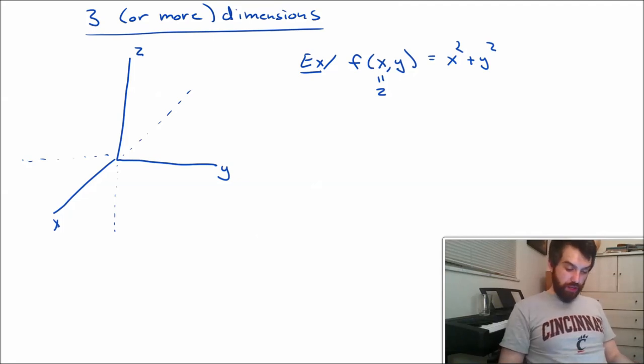Well, one of the things that I might want to look at is what we call a cross-section. And a cross-section is where you go and plug in one of the values. For instance, I can look at the cross-section where I just plug in the value x equal to zero. So this is going to give me zero squared plus y squared is equal to z. And z equal to y squared, that's just a parabola.